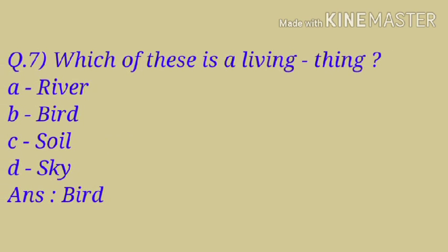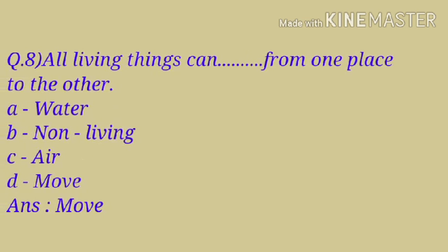Question number seven: Which of these is a living thing? Option A: river, Option B: bird, Option C: soil, Option D: sky. Answer: Bird. Question number eight: All living things can blank from one place to the other. Option A: water, Option B: non-living, Option C: air, Option D: move. Answer: Move. So all living things can move from one place to the other.